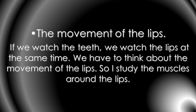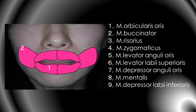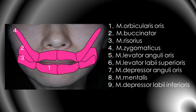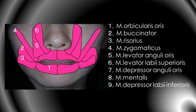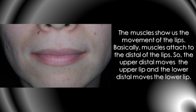The movement of the lips: if we watch the teeth, we must also watch the lips at the same time. We have to think about the movement of the lips. So I study the nine muscles around the lips. These muscles show us the movement of the lips. Basically, muscles attach to the distal of the lips — the upper distal moves the upper lip, and the lower distal moves the lower lip.